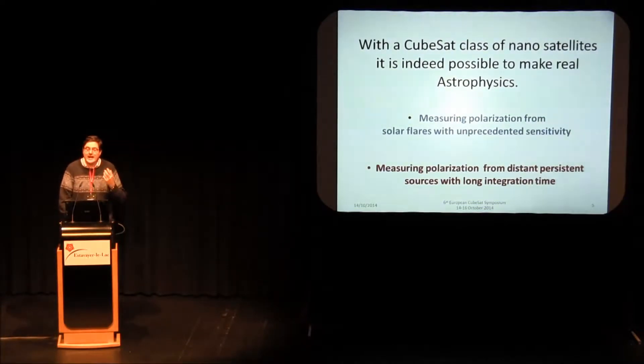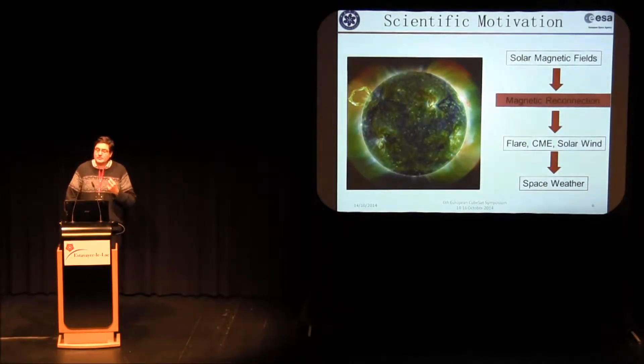With the CubeSat class of nanosatellite, it is possible to make real astrophysics by measuring polarization from solar flares with unprecedented sensitivity and measuring polarization from distant and persistent sources with very long integration time. The scientific motivation is studying solar flares. Solar flares happen after a magnetic reconnection event, when the magnetic field energy in the magnetic field is dissipated and produces accelerated particles toward the sun and they give rise to a flare.